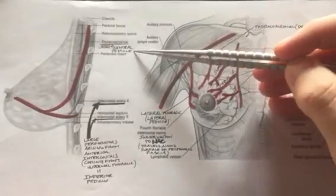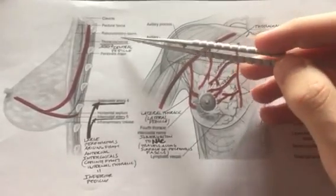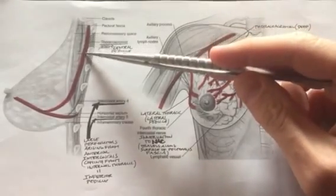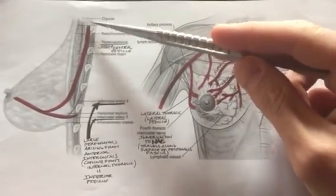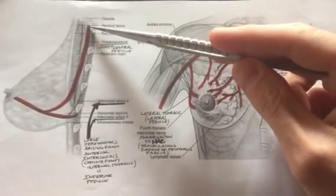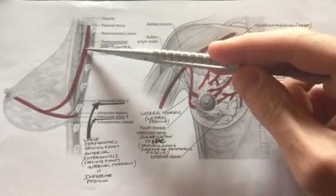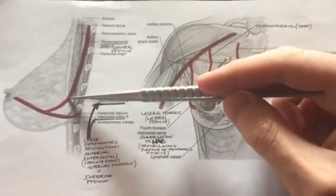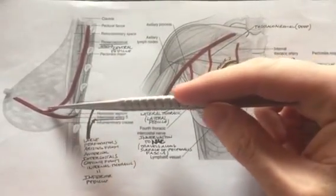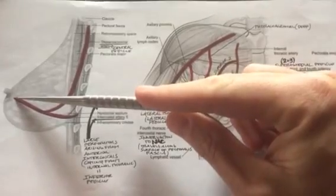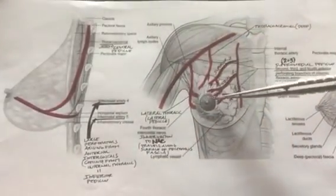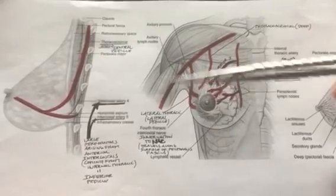For the central pedicle: coming off the thoracoacromial artery — a branch of the subclavian — this vessel travels behind the pectoralis major muscle, then pierces through it and supplies the nipple areola complex centrally, hence the central pedicle. It cannot be seen in this view because it is directly behind the nipple areola complex.